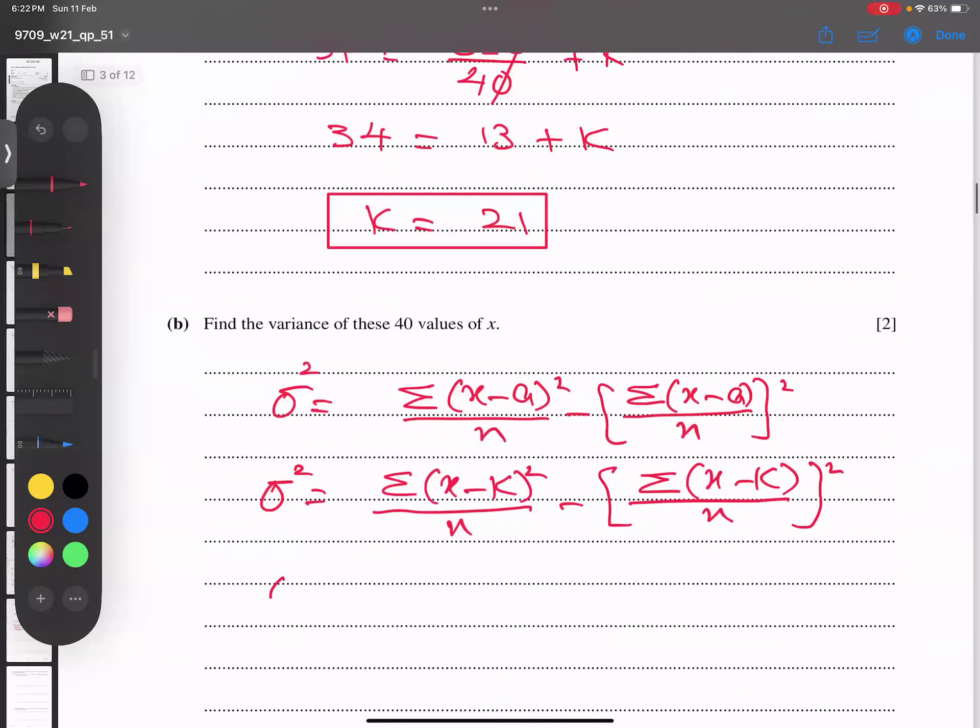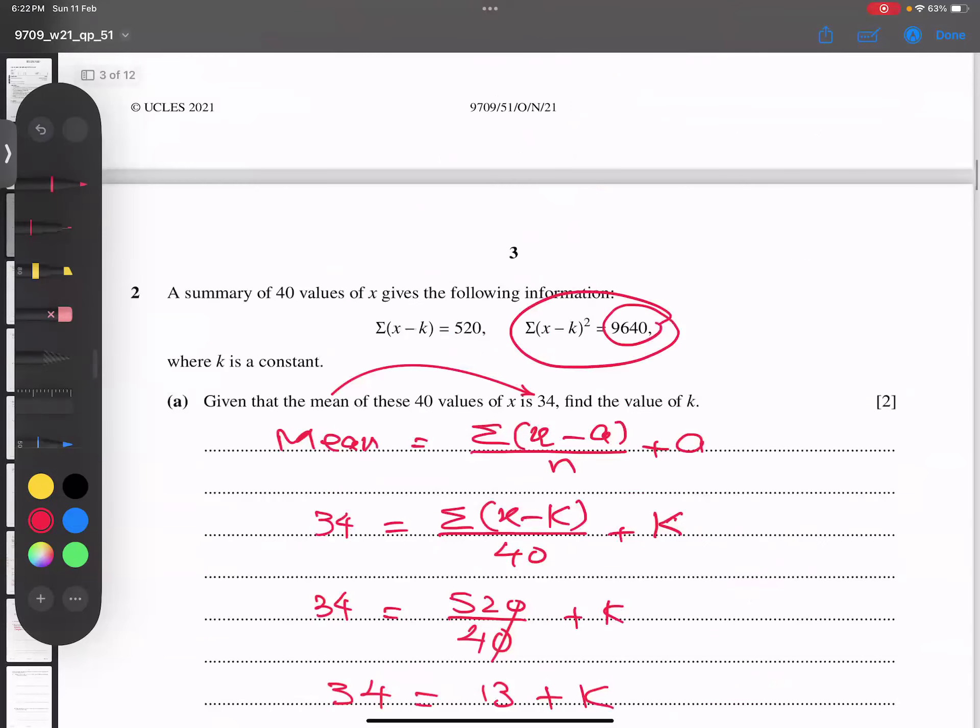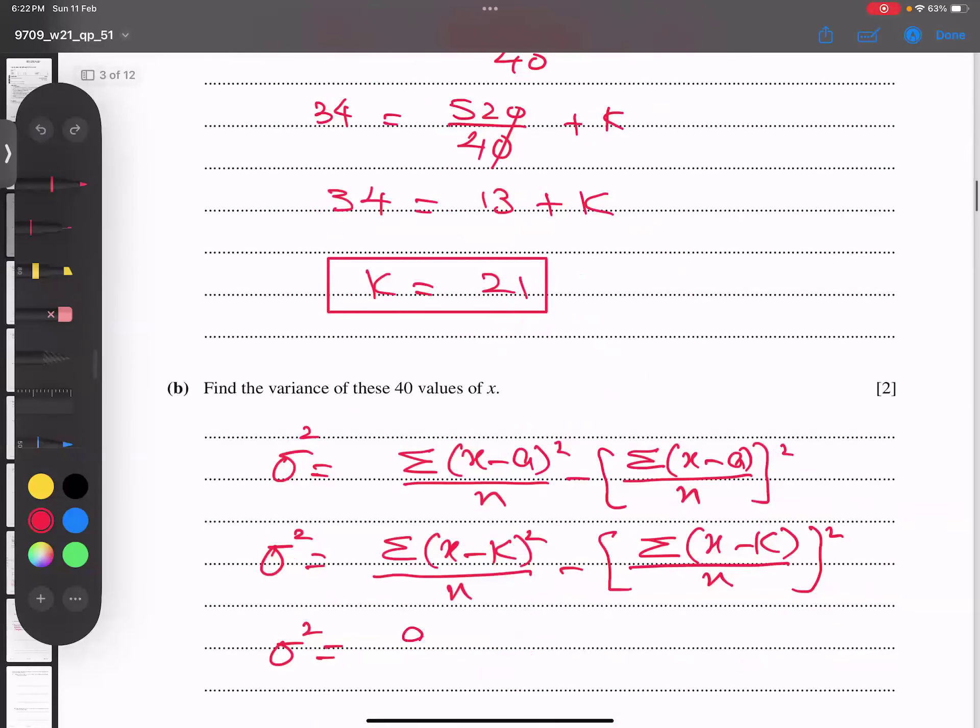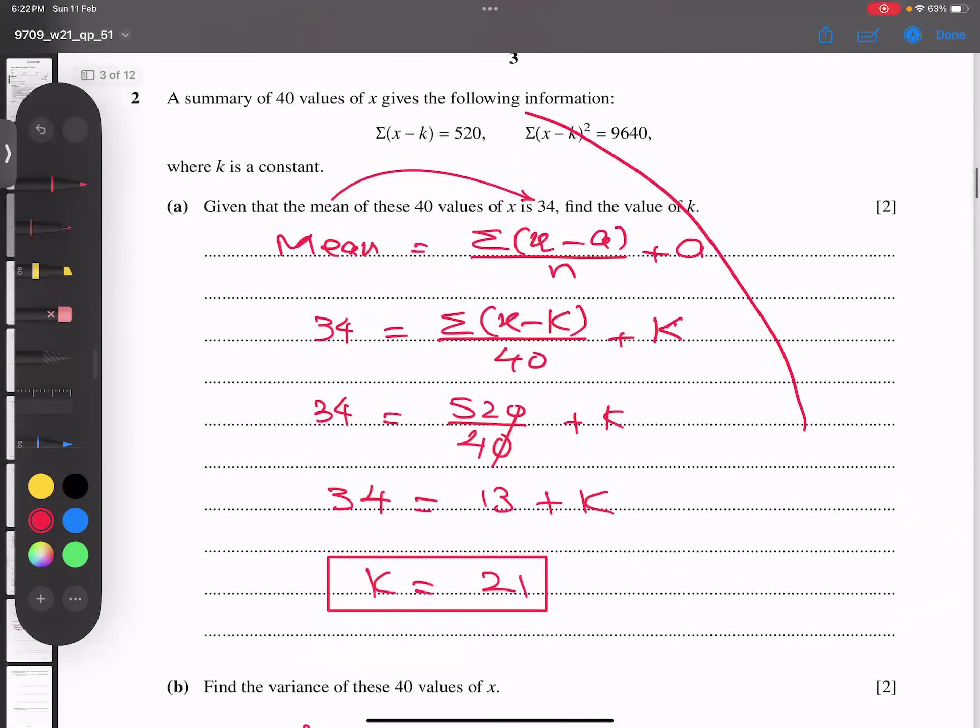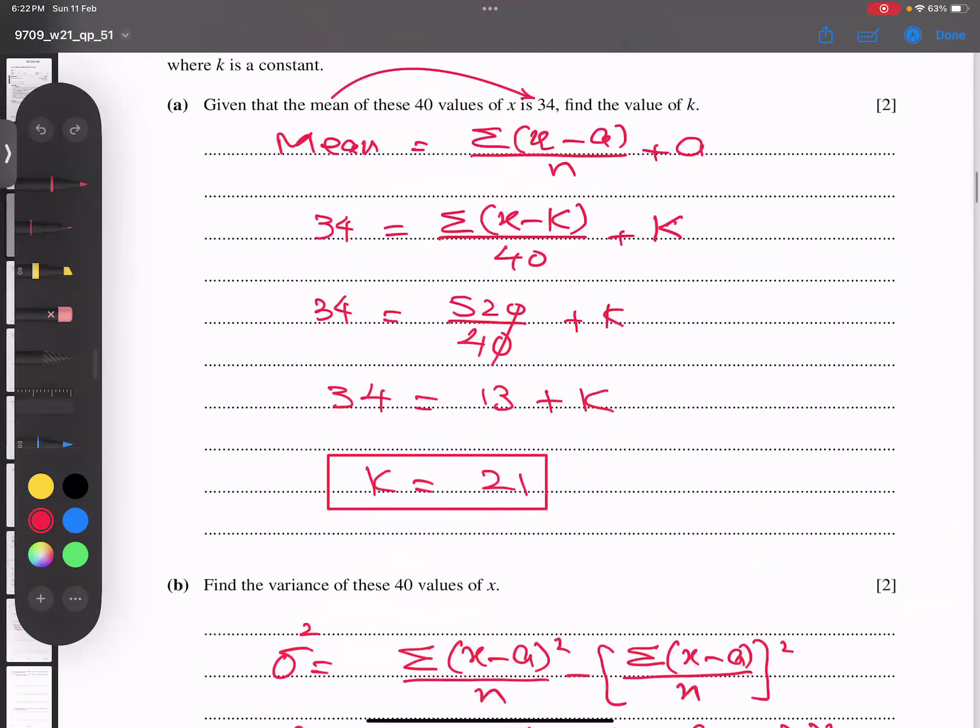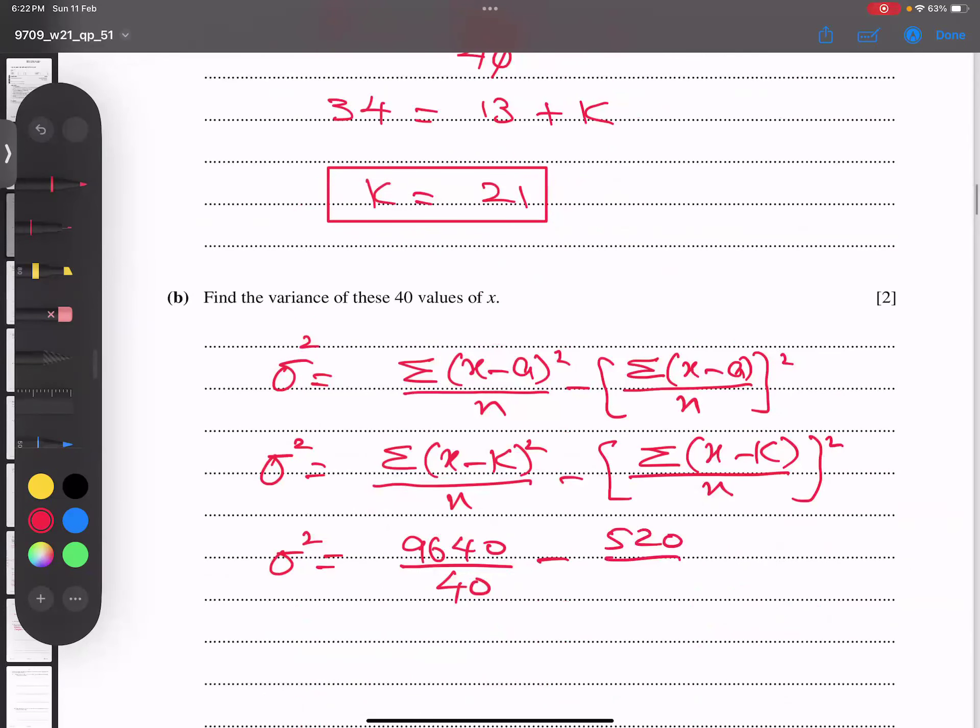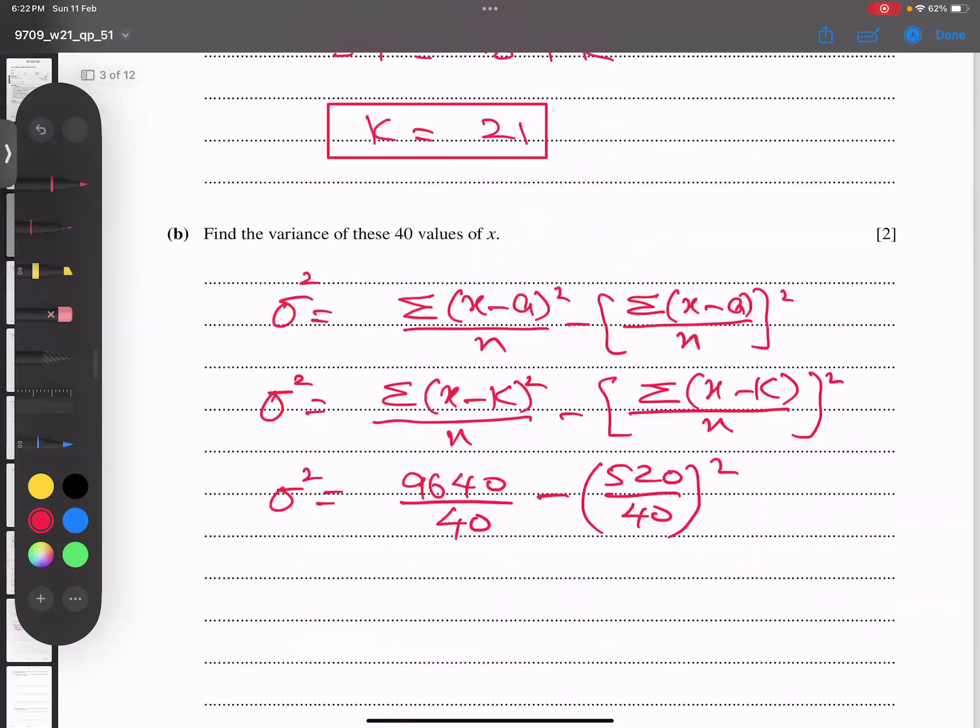Simply plug in the numbers and values. Sigma squared is my target. This value is 9640, so 9640 over 40. This value I can get from here: 520, so 520 over 40, whole squared.